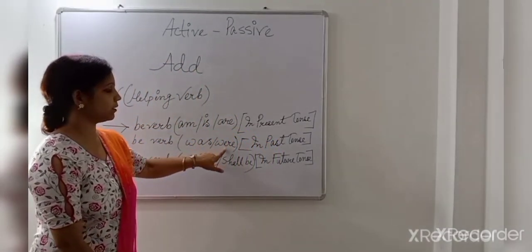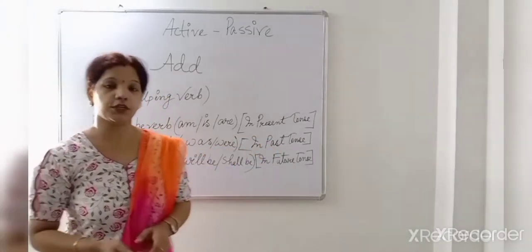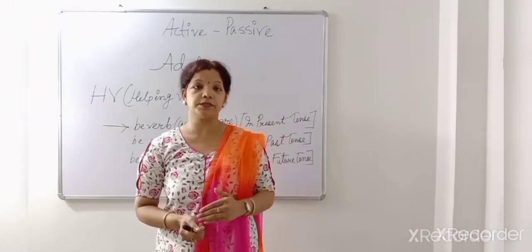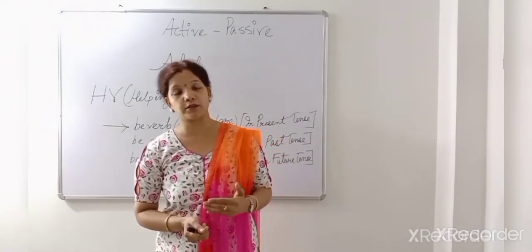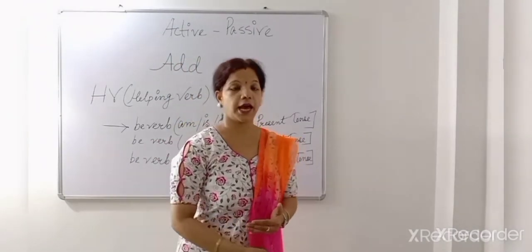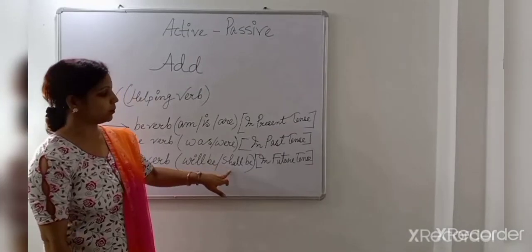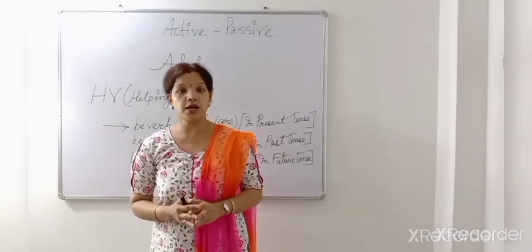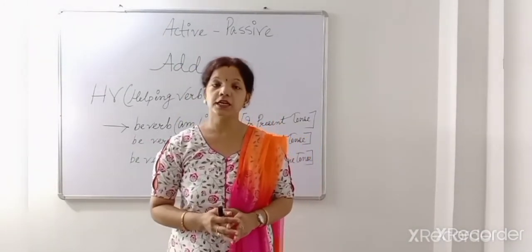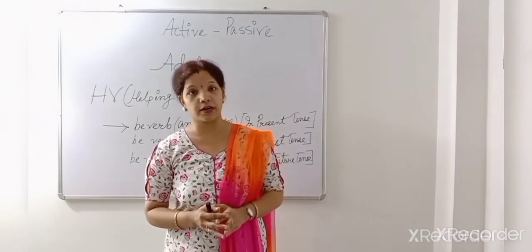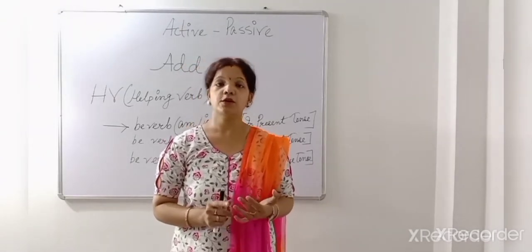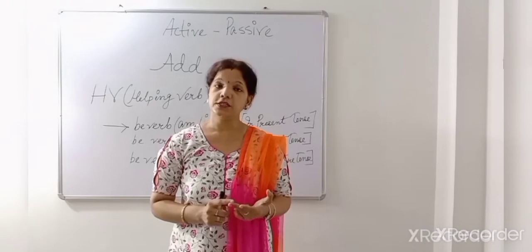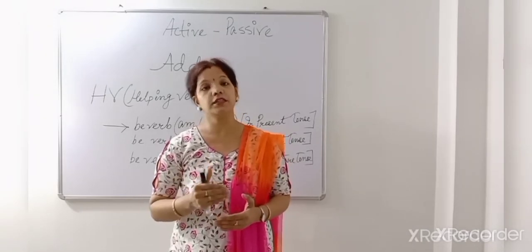We use 'was' and 'were' in past tense. But in future tense, if we want to change from active to passive, we need 'shall be' and 'will be' in future tense. So in passive voice, in present tense we use 'is' and 'are', in past we use 'was' and 'were', and in future we use 'shall be' and 'will be'. These be verbs are used in passive voice only.